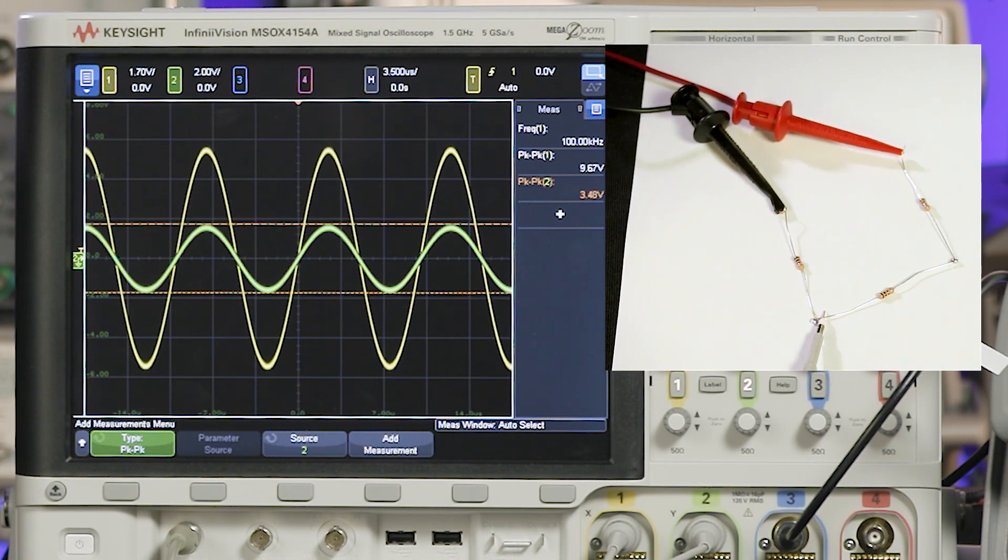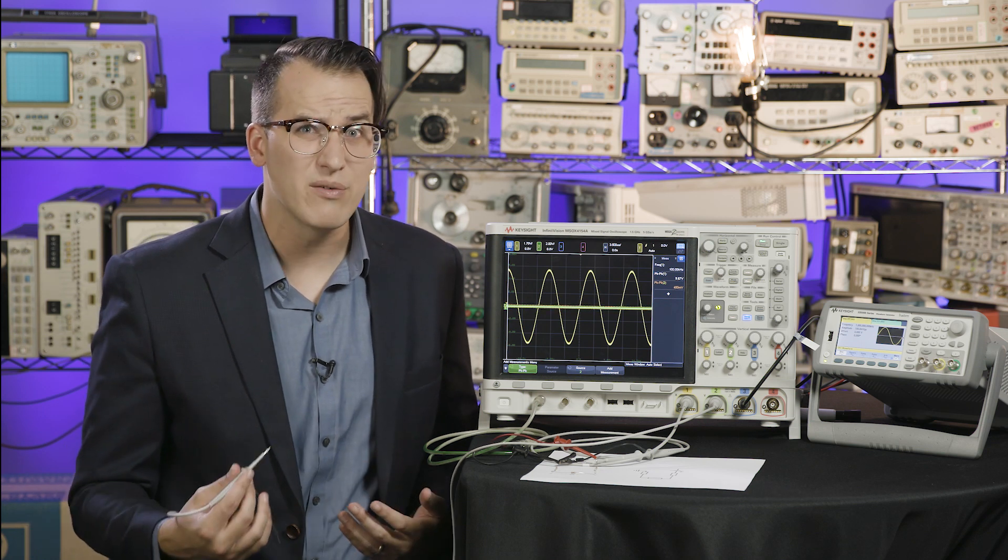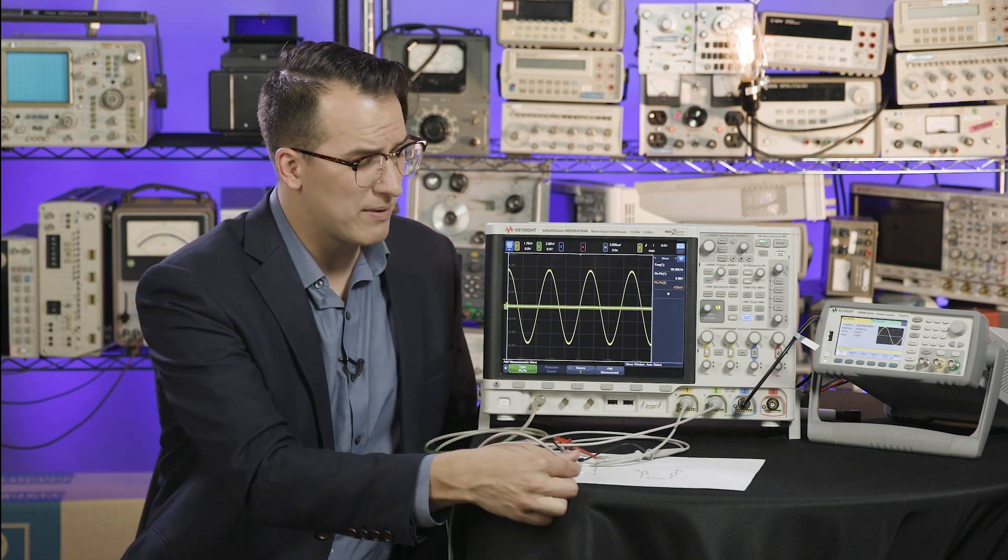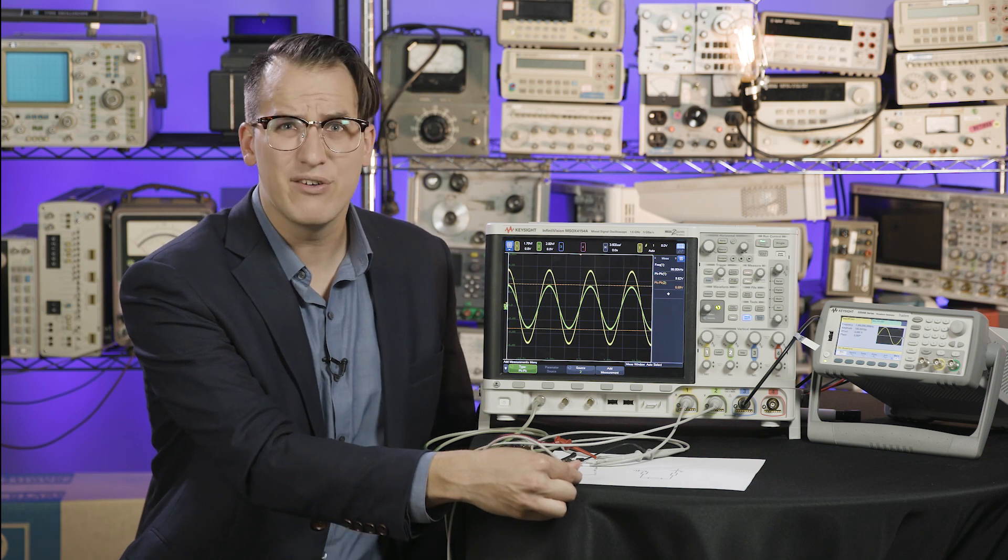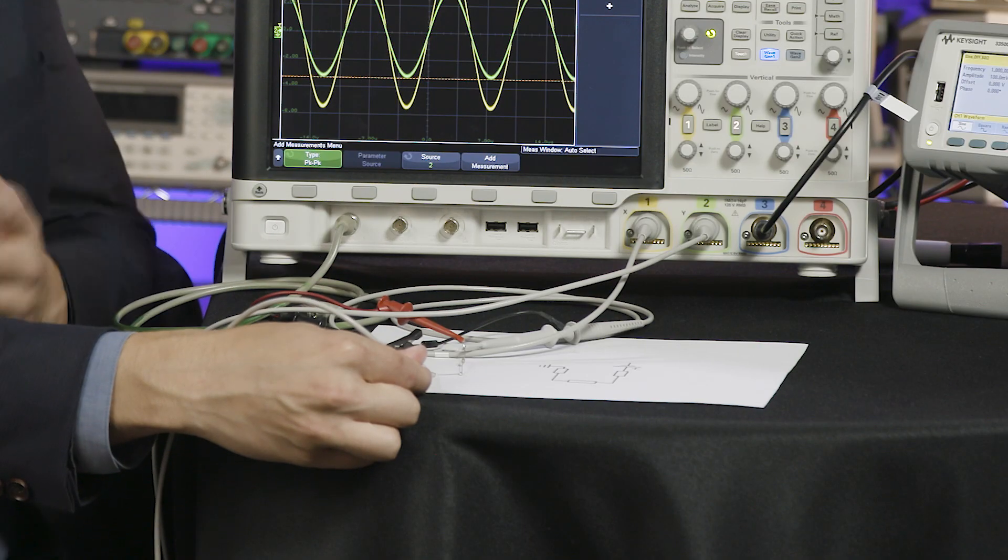What if we want to know the voltage across the middle resistor? When we connect the probe, we measure 6.6 volts, but that also includes the voltage drop across both of these resistors.